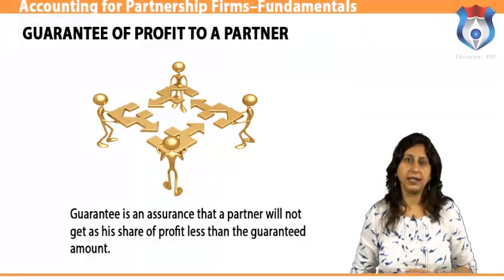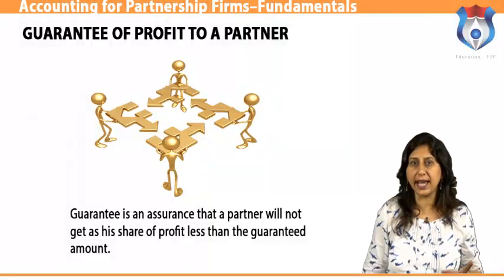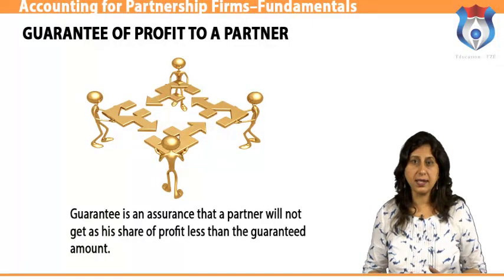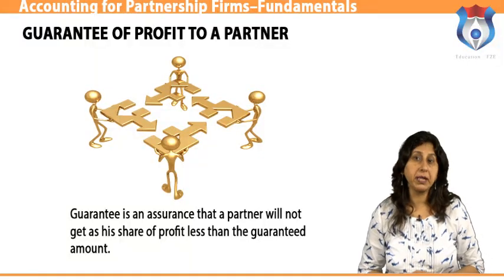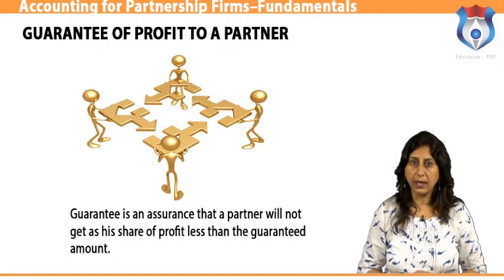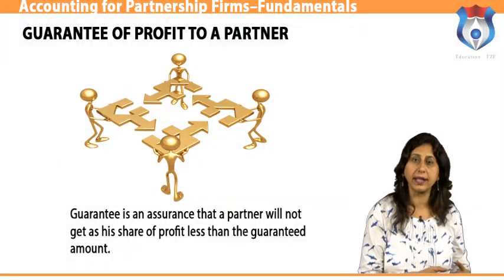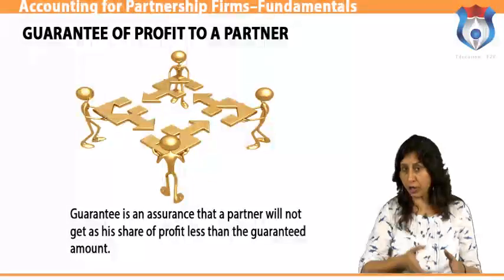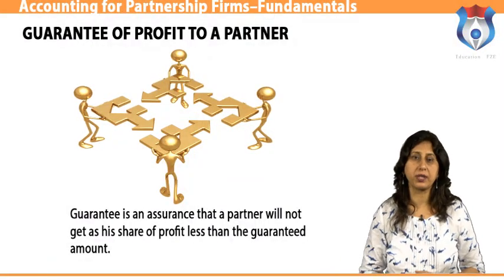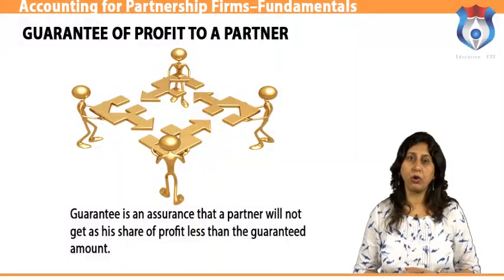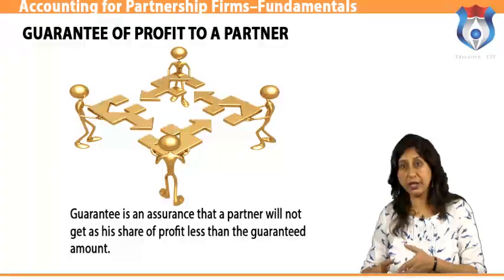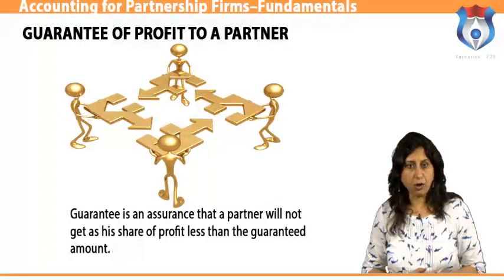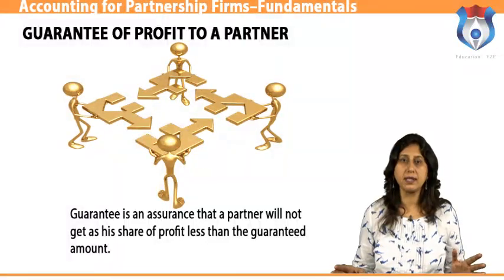Guarantee of profit to a partner: a guarantee is an assurance that a partner will not receive less than the guaranteed amount as their share of profit. There may be two situations — guarantee to one partner by others, and guarantee to a partner by another partner individually. Sometimes a partner is guaranteed a minimum amount by way of share in the profits of the firm. The guaranteed amount is paid when the partner's actual share is less than the guaranteed amount; the deficiency is borne by the other partners in their profit sharing ratio.